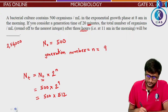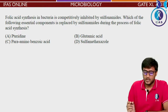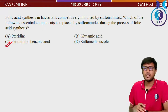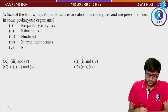Next: Folic acid synthesis in bacteria is competitively inhibited by sulfonamides. Which essential component is replaced by sulfonamides during folic acid synthesis? This is a directly information-based question. The answer is para-aminobenzoic acid (PABA).